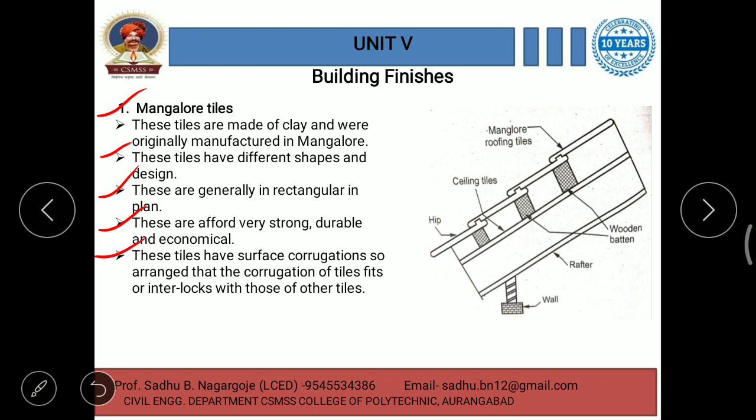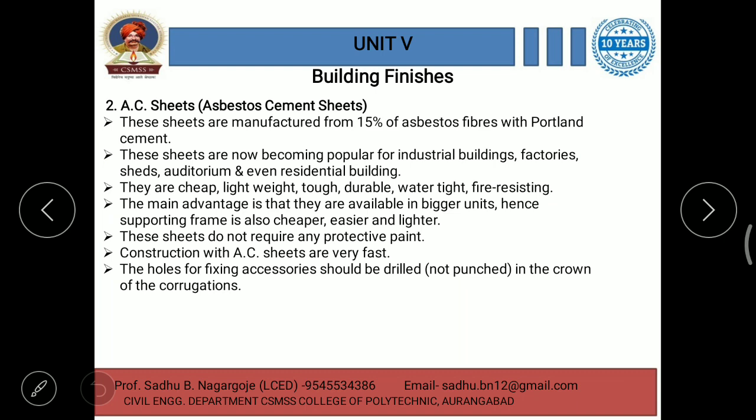The second special roof covering method is AC sheets — asbestos cement sheets. These are very commonly used nowadays in many places. These sheets are manufactured from 15% asbestos fibers with Portland cement. They are now becoming popular for industrial buildings, especially factories, sheds, auditoriums, and even residential buildings.